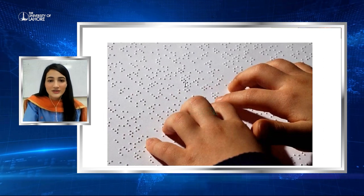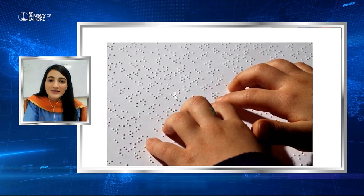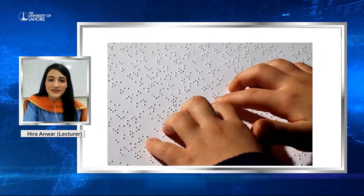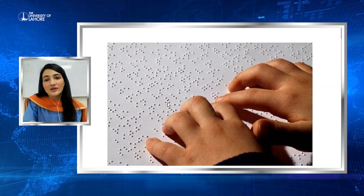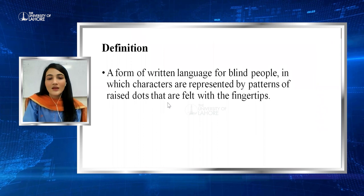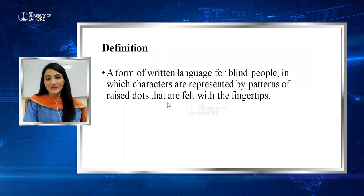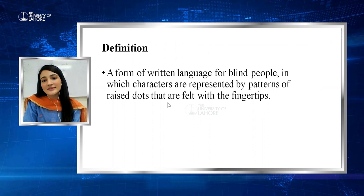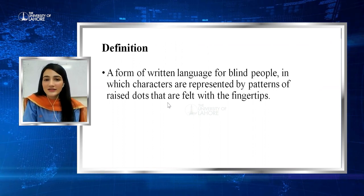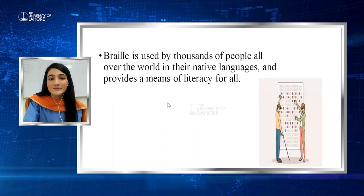If you can see in this picture, Braille is based on a number of raised dots. These are raised dots and they are small enough to fit under the tip of your finger. Braille is a form of written language for blind people in which characters are represented by patterns of raised dots that are felt with the fingertips.